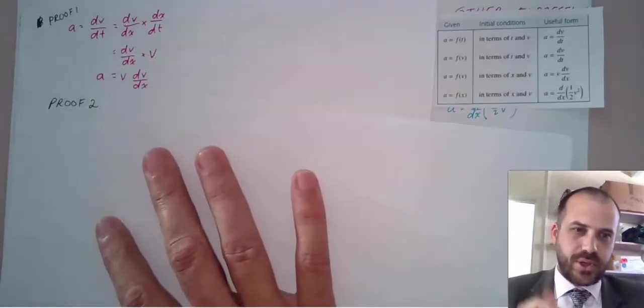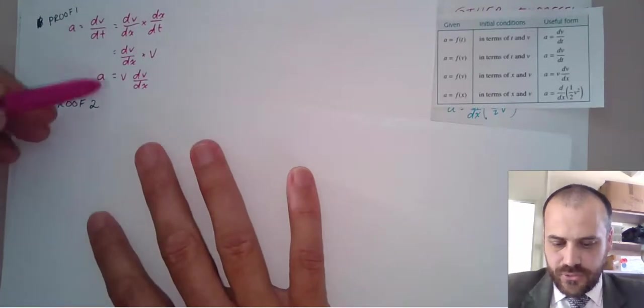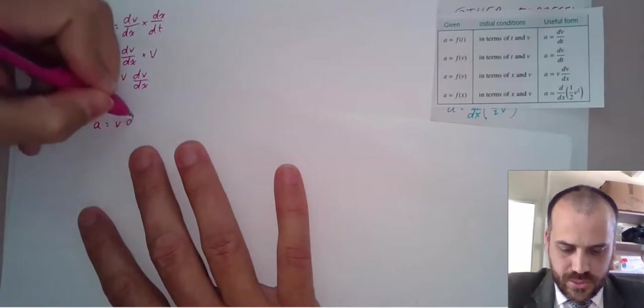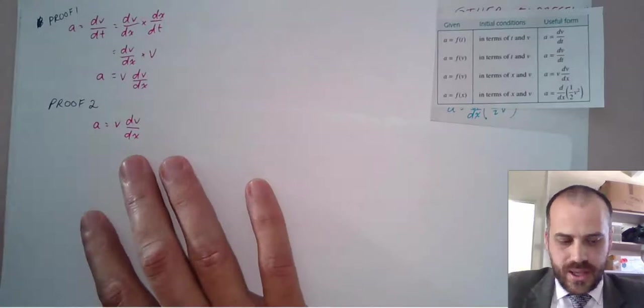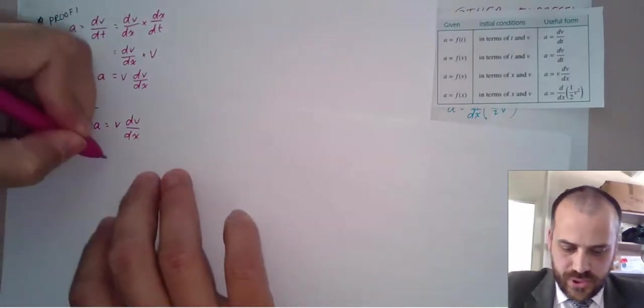What about this last one? All right, this last one here, it's going to blow your socks off because you do something pretty cool. We start off from what we just figured out. We know that acceleration is equal to velocity times the change in velocity with respect to position. And then we're going to do something super, super funky to this velocity.